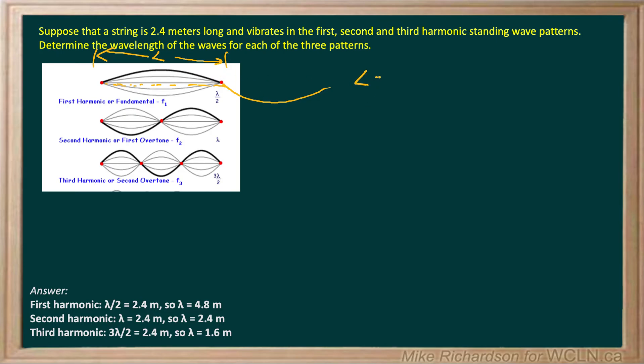So if the length is 2.4 meters, if we're looking at the first harmonic, the wavelength will be double that, 2 times 2.4. So the wavelength of the first one is 4.8 meters.